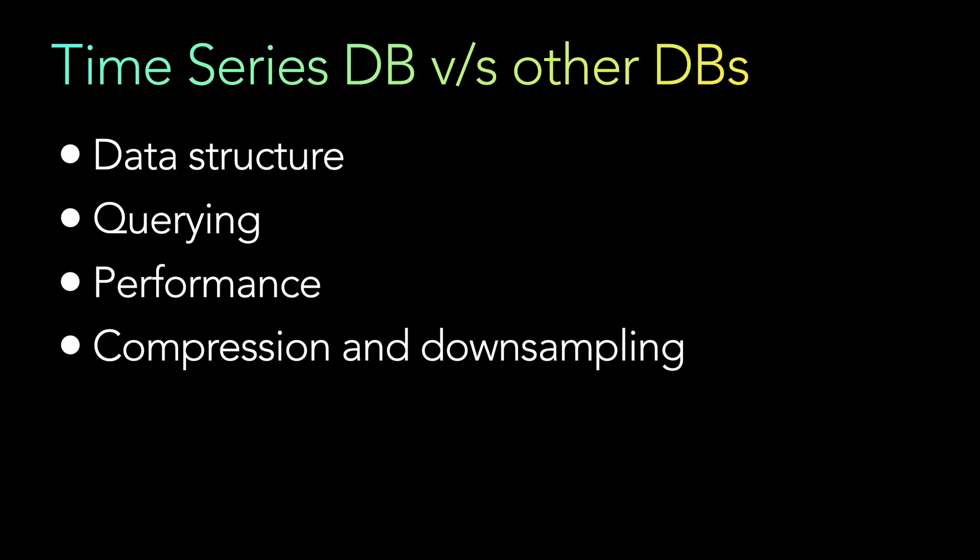Next is compression and downsampling. Time series databases often employ techniques like data compression and downsampling to reduce storage requirements and improve query performance. Because the data volume in a time series database is huge, you need to optimize both query performance and storage performance, which is where compression and downsampling come in.